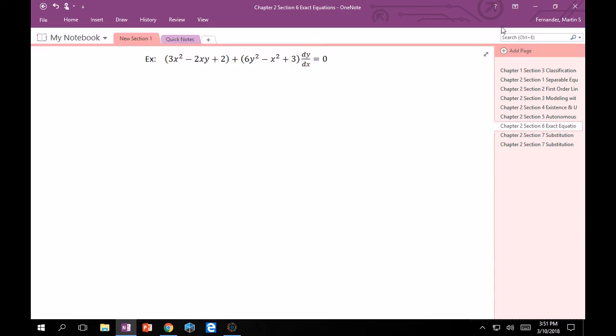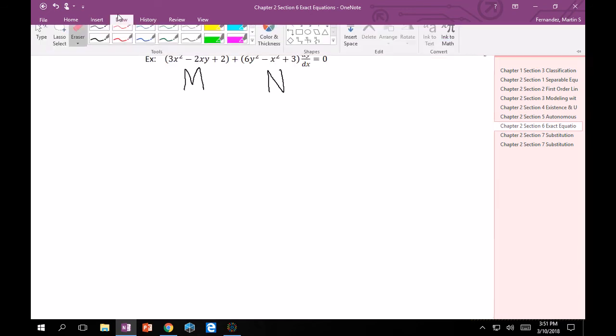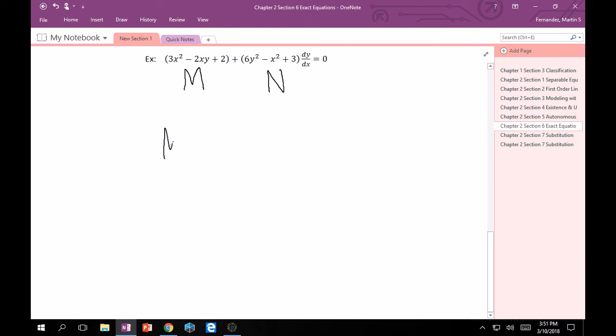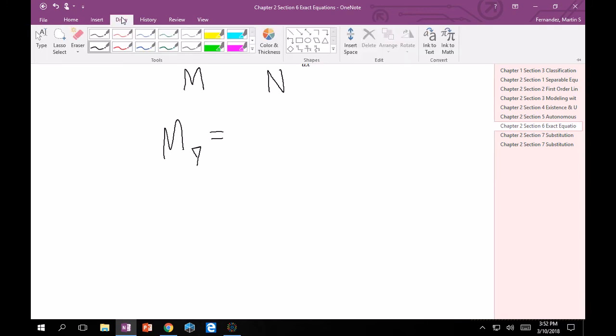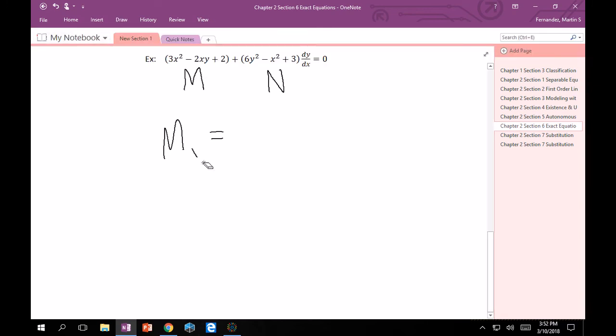Great. Okay. So, this one. 3x squared minus 2xy plus 2. 2 plus quantity 6y squared minus x squared plus 3 times dy dx. Okay. It is clear that from our formula, this top one here is m. And this one is n. Right? So, in order to check if it's exact, we have to check my. It's a really bad m.